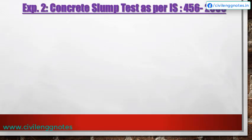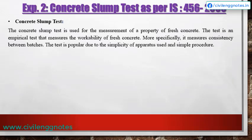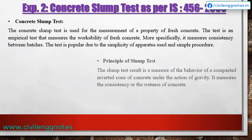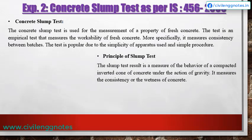Experimental Program 2: We conducted a slump test to determine the workability of the concrete. The concrete slump test is used for measurement of a property of fresh concrete. It is an empirical test that measures workability and, more specifically, consistency between batches. The test is popular due to the simplicity of the apparatus and simple procedure. The slump test result is a measure of the behavior of a compacted inverted cone of concrete under the action of gravity — it measures the consistency or wetness of concrete.